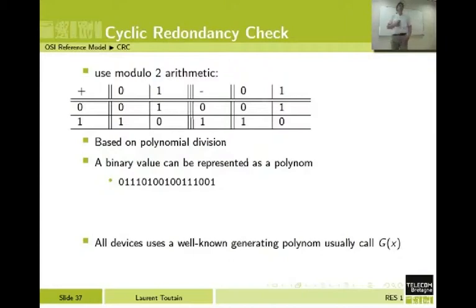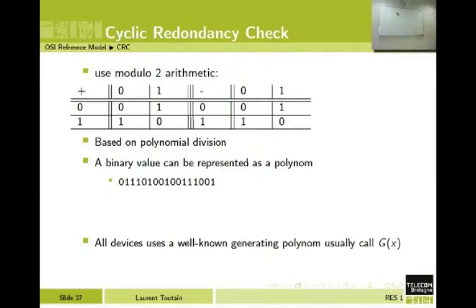So: 0 plus 0 is 0. 0 plus 1 is 1. 1 plus 0 is 1. And 1 plus 1? It's 0. Because 1 plus 1 is normally 2, but in modulo 2 it is the remainder of dividing 2 by 2, which is 0.